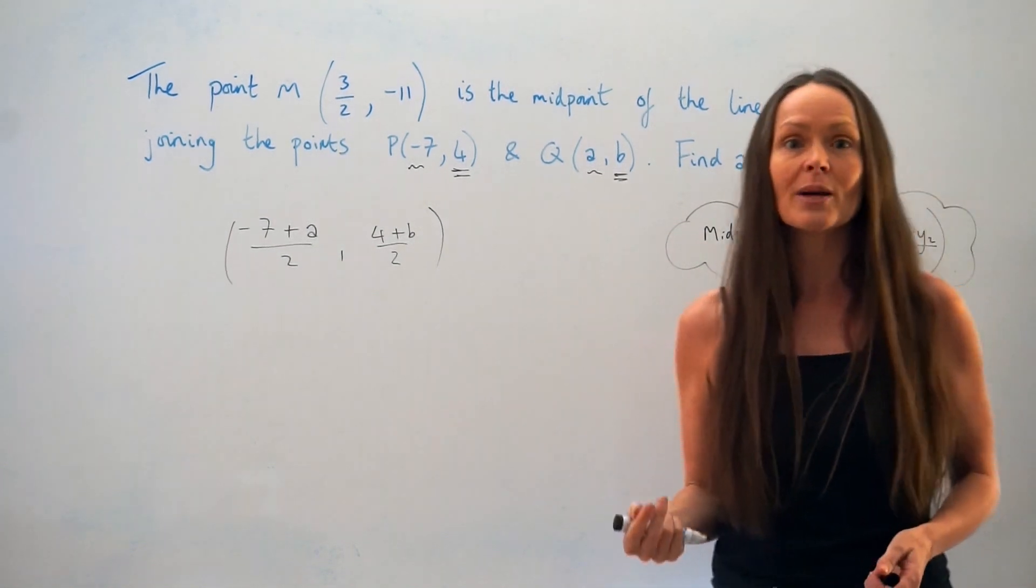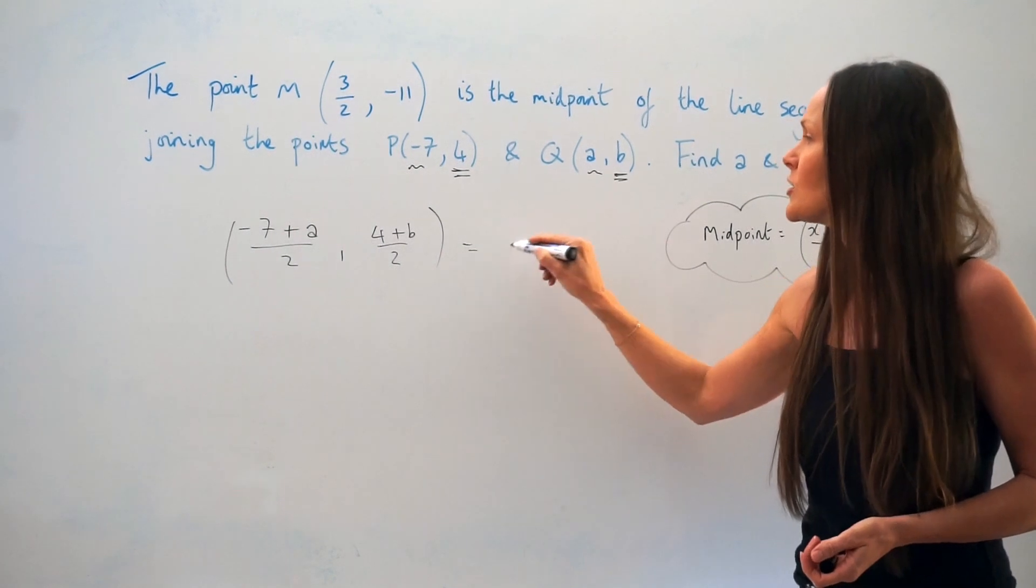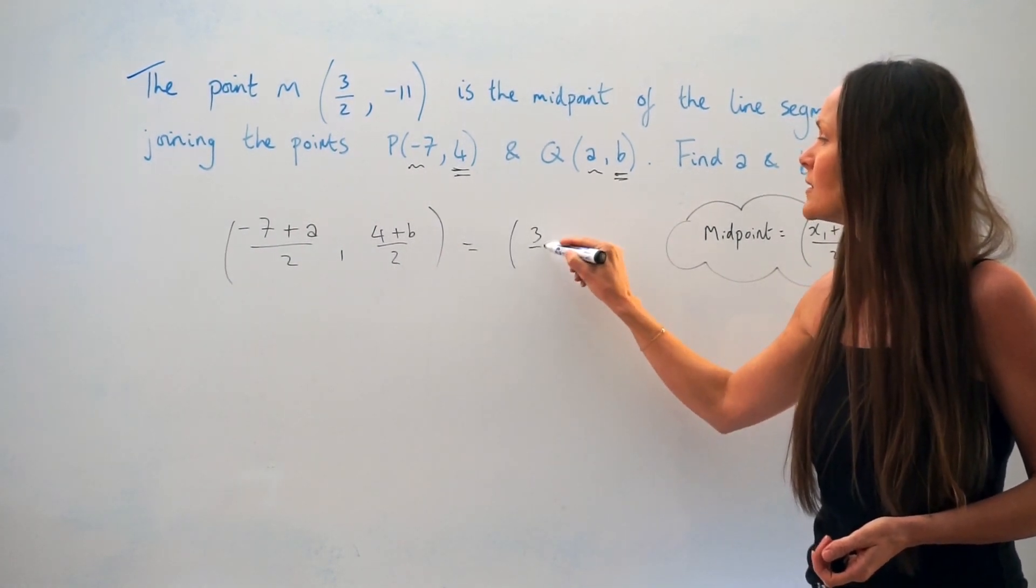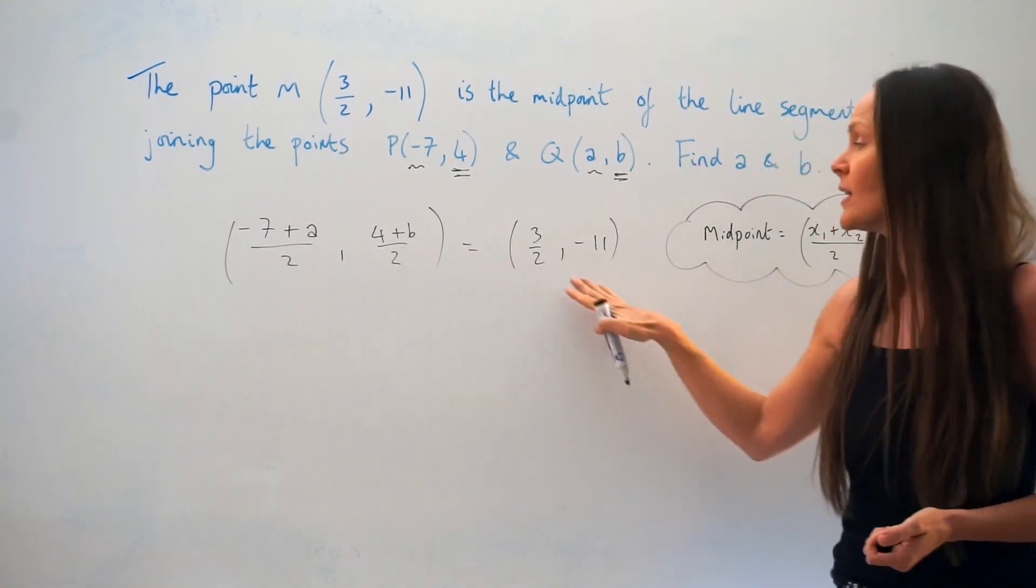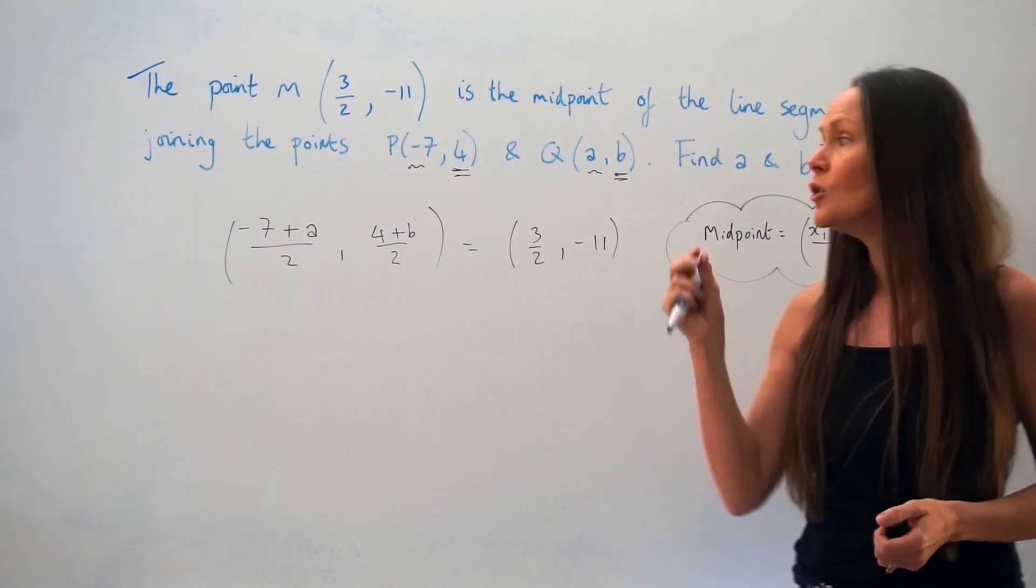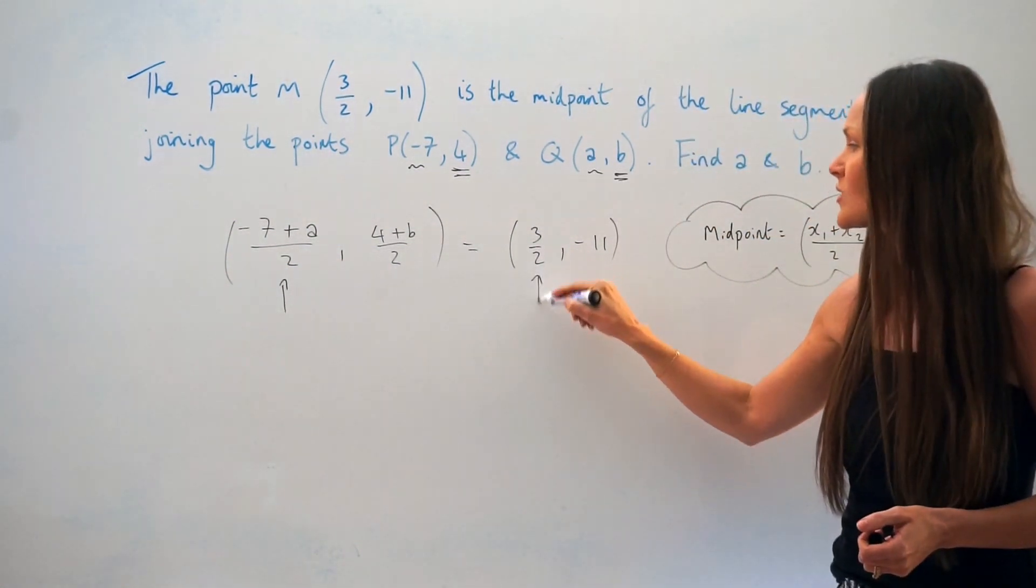Except in this question, we actually know what the midpoint is. It's over here. So you can put this calculation equal to your midpoint. Now, since these are equal to each other, we can look at the x calculation and put it equal to the x coordinate.